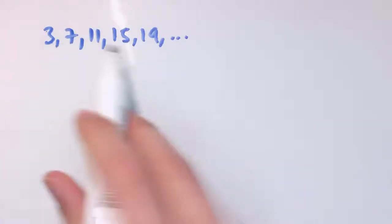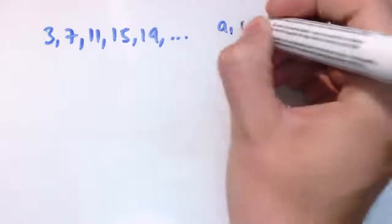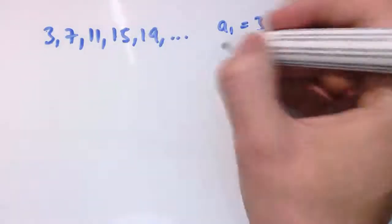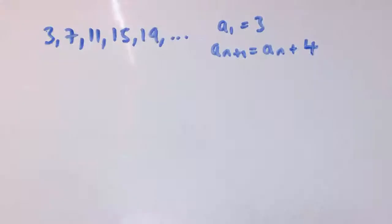It's starting at 3 and going up in 4s, so I could say this is called a sequence. a₁ is 3 and aₙ₊₁ is aₙ plus 4.